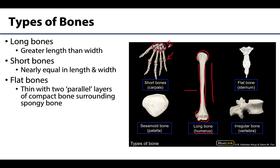Flat bones are pretty descriptive in terms of their name. They're going to be composed of two nearly parallel but slightly curved plates or tables, made up of compact bone, and then you will have spongy bone in the middle region. The sternum or breast bone is a good example of a flat bone, but many of the cranial bones as well as even the ribs are considered flat bones.